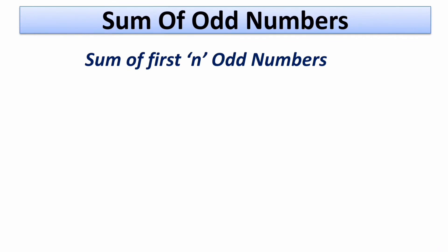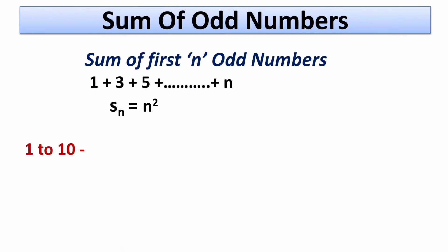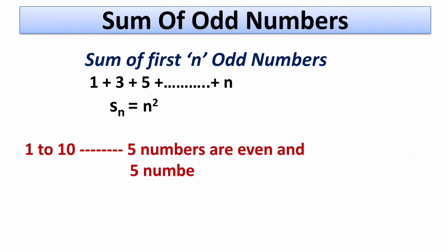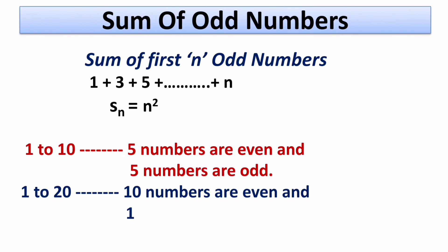Now let's see how to find the sum of first n odd numbers. Odd numbers are 1 plus 3 plus 5 up to plus n. To find the sum of n odd numbers we use the formula Sn equals n squared. Remember: from 1 to 10 we have 5 even and 5 odd numbers, and from 1 to 20 we have 10 even and 10 odd numbers.